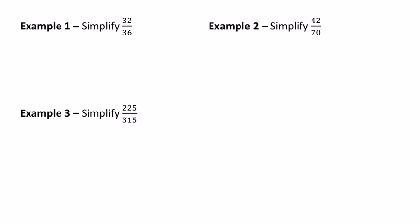since 32 and 36 are both even, I can divide 2 into both of them. 32 divided by 2 equals 16, and 36 divided by 2 equals 18. So I've simplified this fraction to 16 over 18, but that's not simplest form.